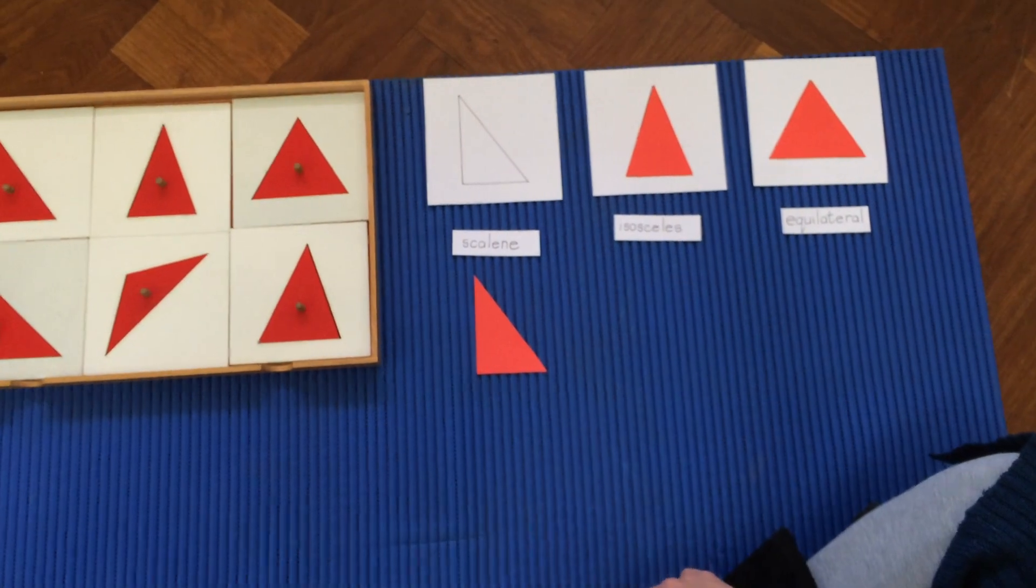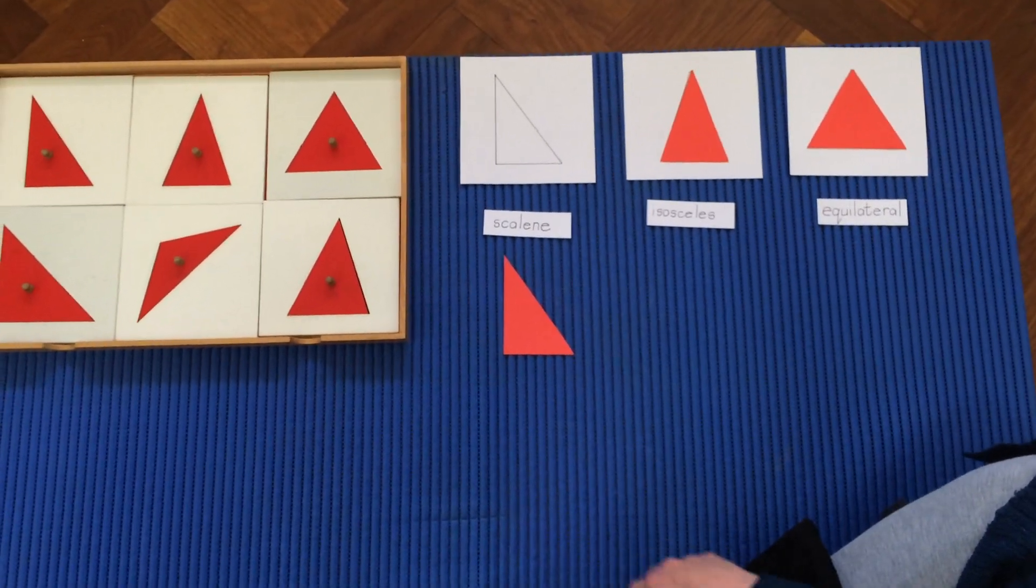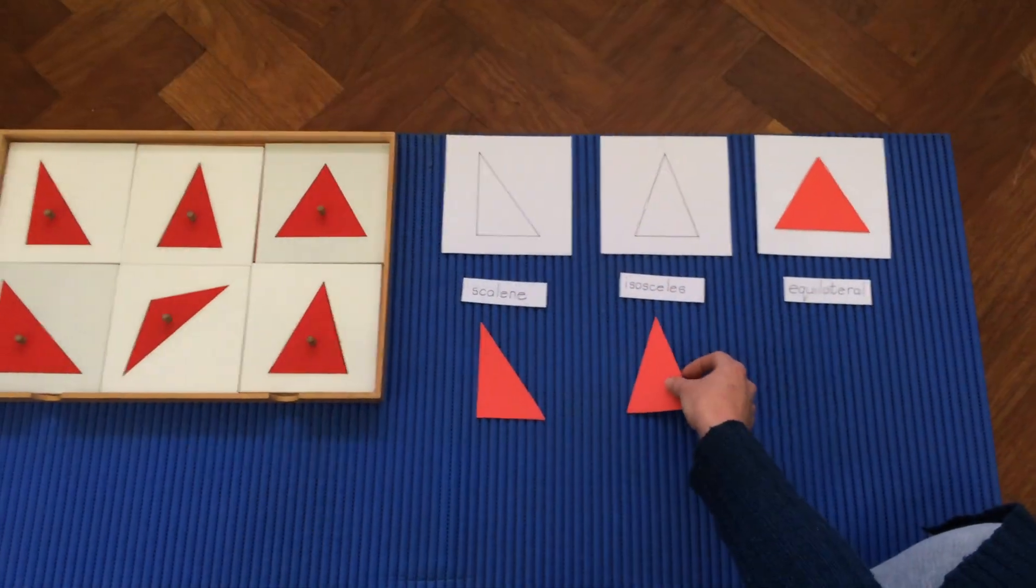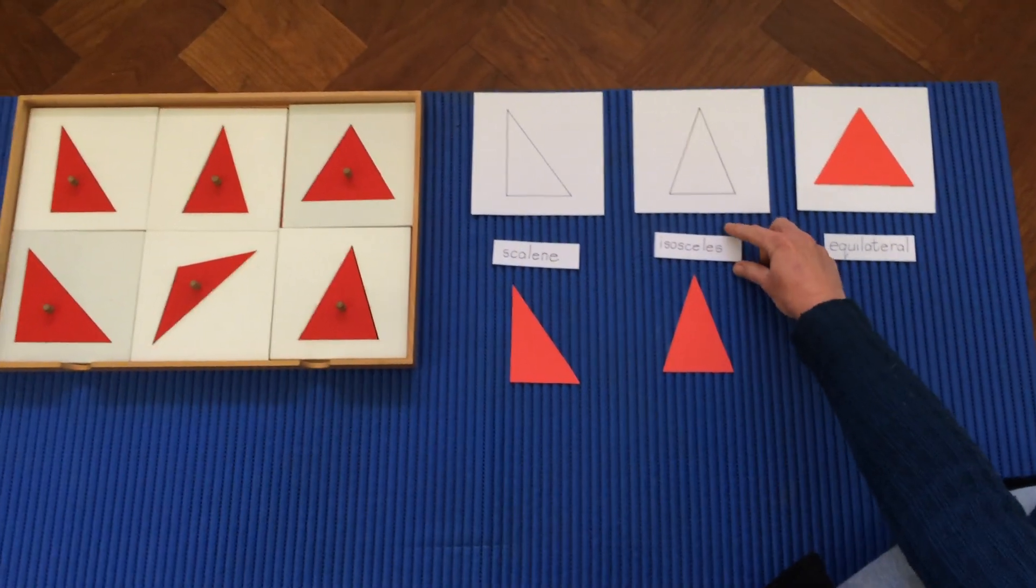Three different sides is called scalene. Two sides that are the same, isosceles.